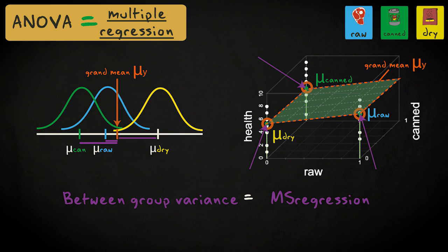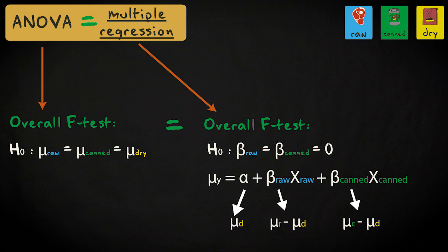Of course, the individual t-tests of the regression coefficients do not necessarily correspond to the post-hoc comparisons in analysis of variance. But the overall F-test in regression and the F-test in analysis of variance are not just similar — they are the same.